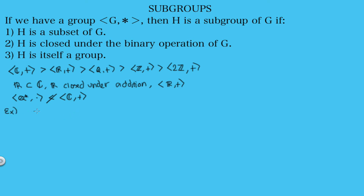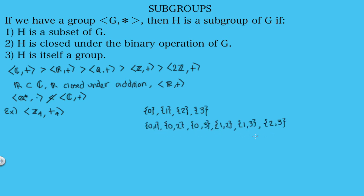Now let's look at the integers modulo four with addition modulo four and find its subgroups. First, a subgroup must be a subset of ℤ₄ = {0, 1, 2, 3}. Let's find all subsets. Since a subgroup must be a group, it has to contain the identity element, which is zero. So anything that doesn't contain zero can't be a subgroup, and we can cross those out.